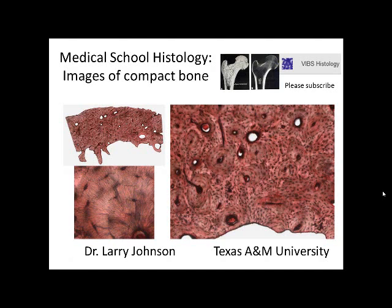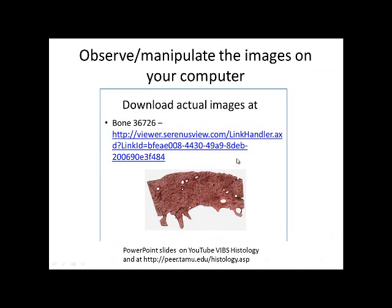You can observe and manipulate these images on your computer. If you go to the provided URL and download this file, you'll be able to see the compact bone specimen. You can also find the URL on the VIBS Histology YouTube site under PowerPoint slides, where you can download the image directly.